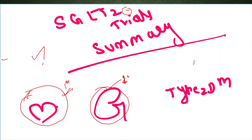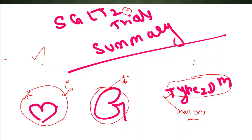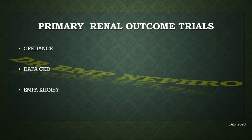They found it useful in non-diabetic patients with respect to CKD and heart failure. So there are trials focused on diabetic patients and trials in non-diabetic patients. We will see those in the overall summary so that studying the individual trials is easier. The three important primary renal outcome trials are CREDENCE, DAPA-CKD, and EMPA-KIDNEY.